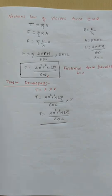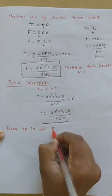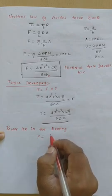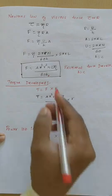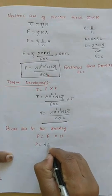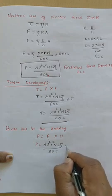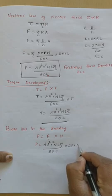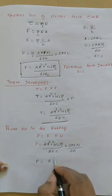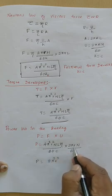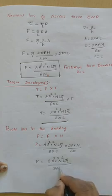If we want to find out the power loss in the bearing, power loss P equals frictional force into velocity U. We know that frictional force is 4π²R²NL·eta divided by 60 into C, and U is 2πRN divided by 60. So the power loss will be 8π³R³N²L·eta divided by 3600 into C. This is the power loss in the bearing.